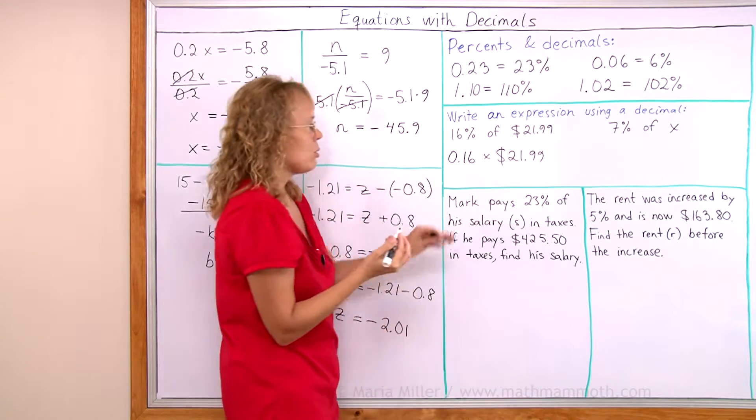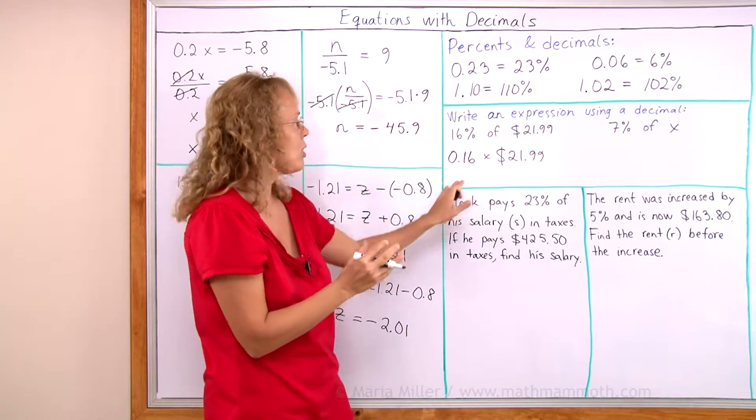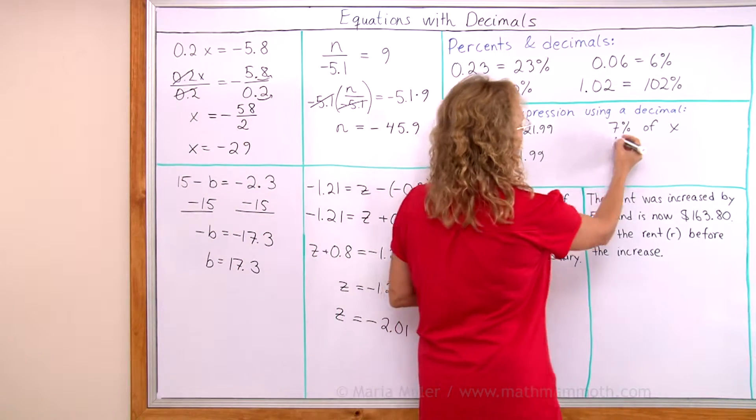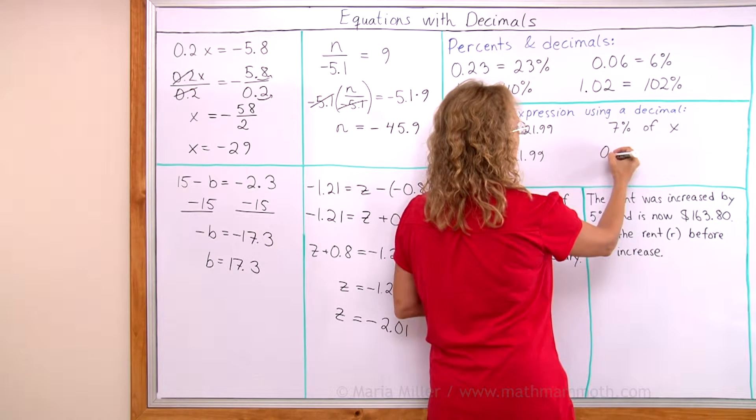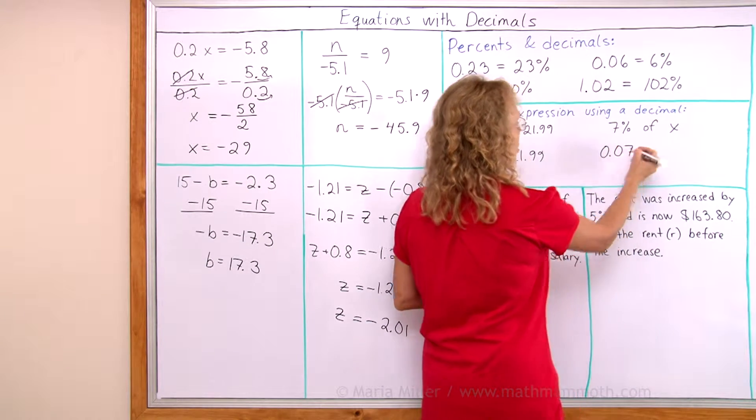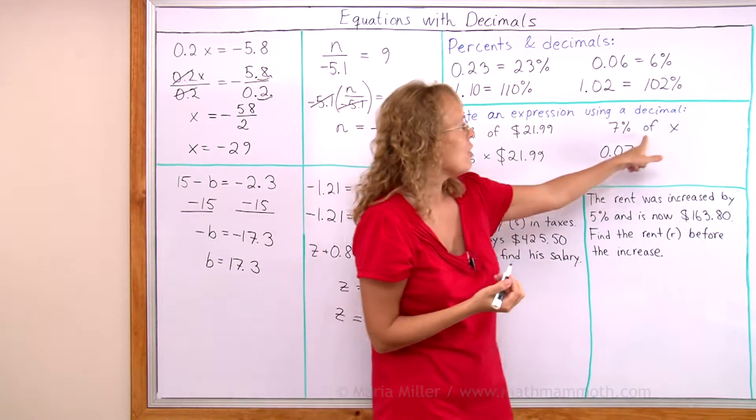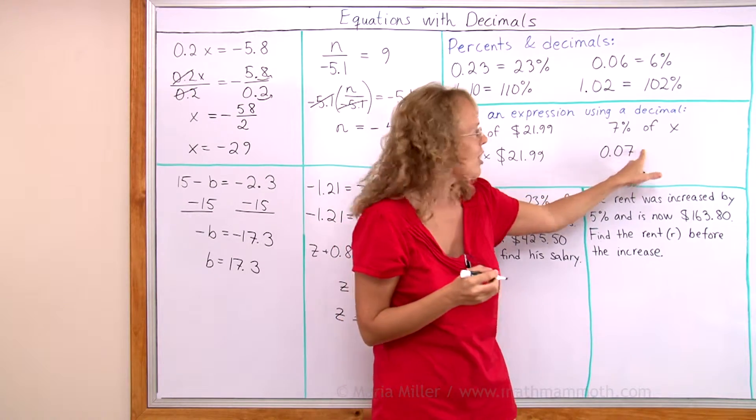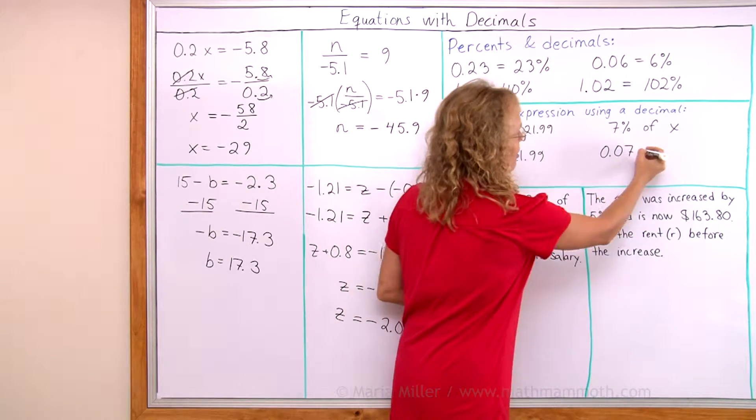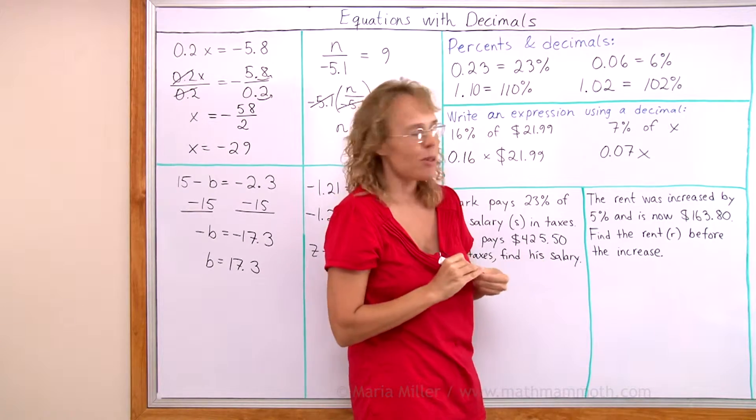And that's what we were asked to do, just write an expression. There's no need to calculate this for now. This one here, 7%, would be, as a decimal, 0.07, or seven hundredths. 'Of' translates into multiplication, and then x here, but I don't need to write the multiplication sign between x and the number.